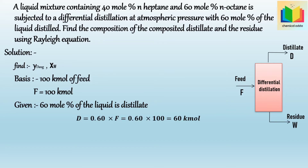Taking the overall material balance on the differential distillation column: F = D + W. Substituting the known values, 100 = 60 + W. Solving this, we get W = 40 kilomoles.